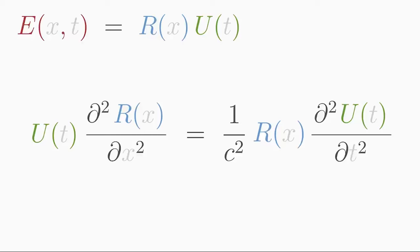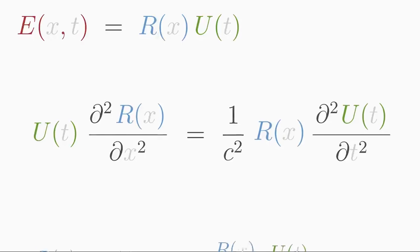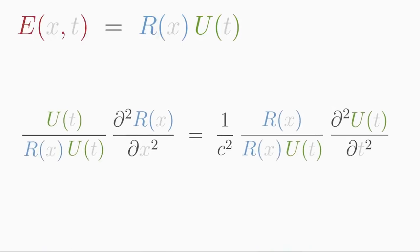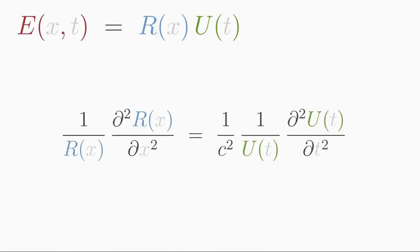The goal now is to separate everything that depends on x from what depends on t. For this, we divide this equation by r times u. Thus, we have achieved that everything that depends on x is on the left side and everything that depends on t is on the right side.